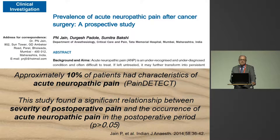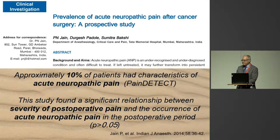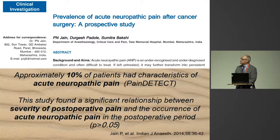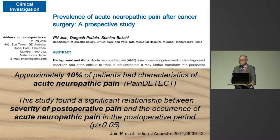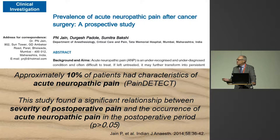After cancer surgery, they used the PainDETECT tool — another screening questionnaire similar to LANSS, with the advantage that only the patient needs to answer it. They found 10% of patients who had cancer surgery had acute neuropathic pain. Consistently with the literature, if you have neuropathic pain you have more severe pain — patients with acute neuropathic pain had significantly higher average pain scores than those with only nociceptive pain.